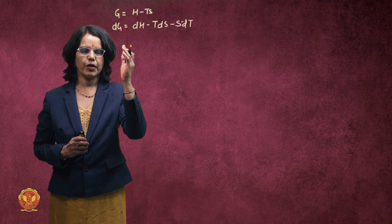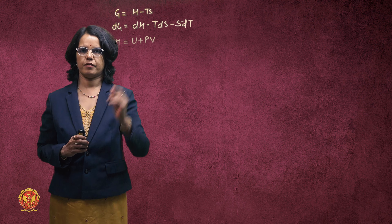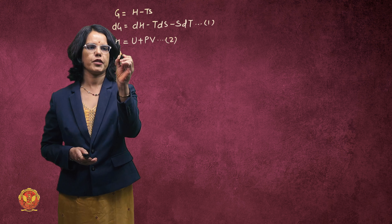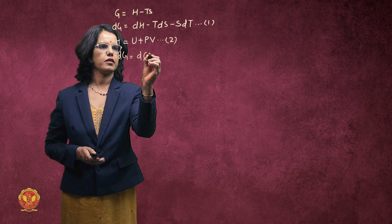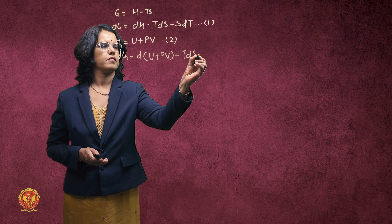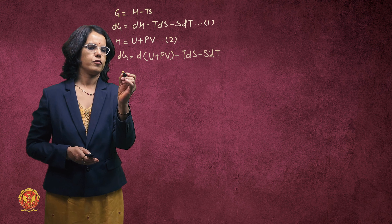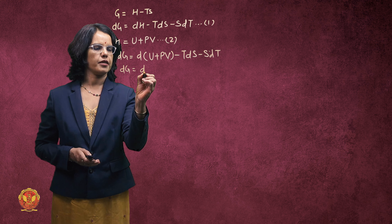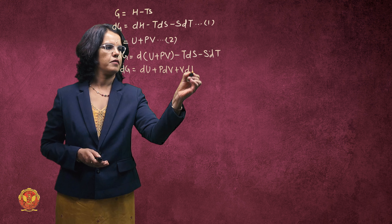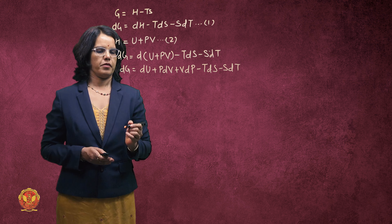We know that H is equal to U plus PV. Substituting this value of H into our equation, we get dG equal to d(U + PV) minus TdS minus SdT, which expands to dG = dU + PdV + VdP - TdS - SdT.